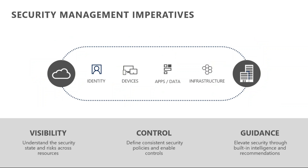Organizations need to protect multiple areas: identity protection, device protection, application protection, data protection, and infrastructure including network. There is a clear availability and security management concern that organizations must address across all these dimensions.